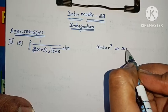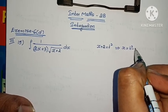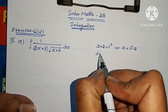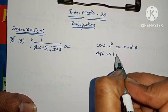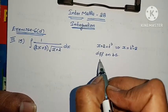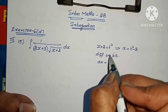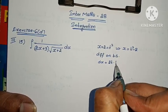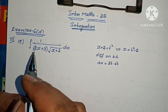From the substitution, x equals t squared minus 2. Differentiating on both sides, dx equals 2t dt. This value is noted.